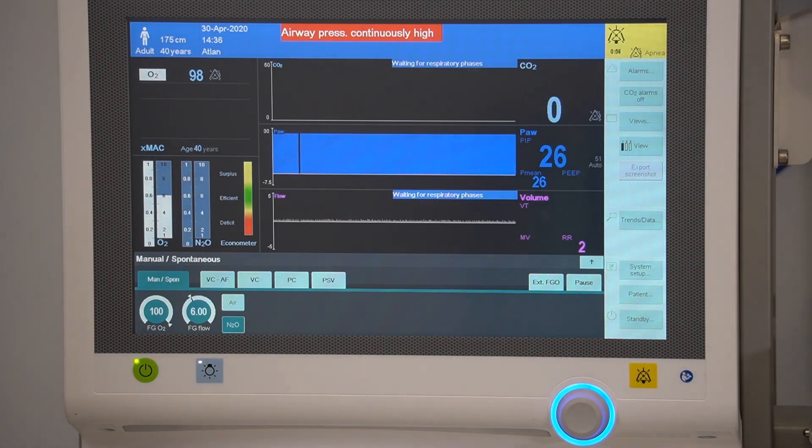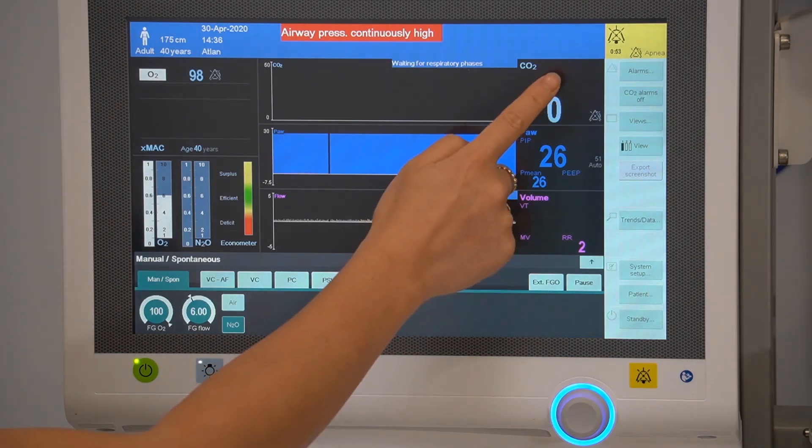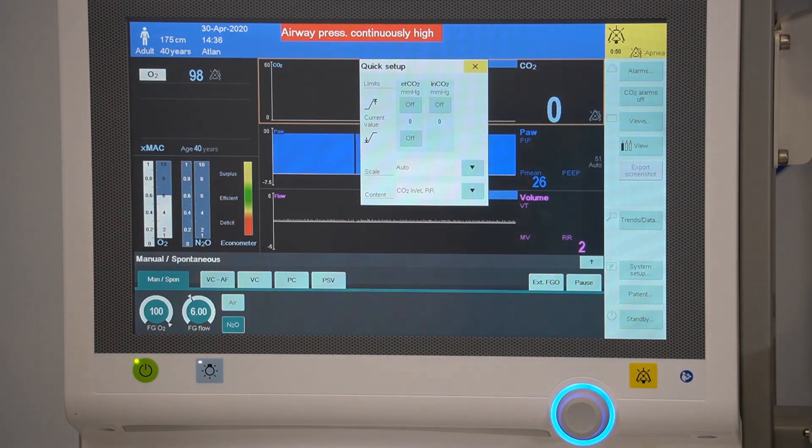Alarm limits for a particular parameter can also be accessed by tapping on the relevant parameter.